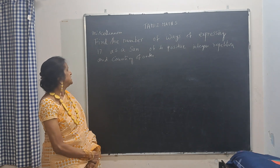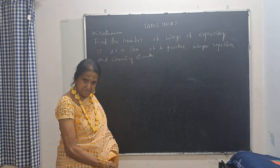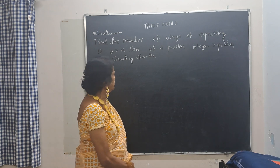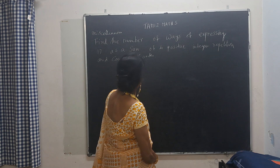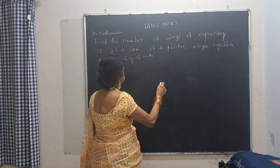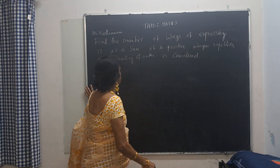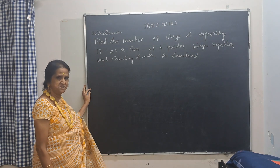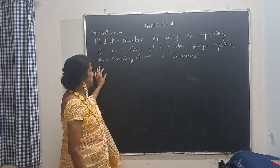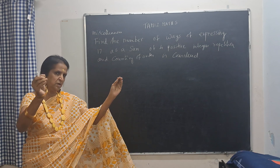Let's start. Find the number of ways of expressing 17 as a sum of 4 positive integers where repetition and counting of order is considered. Repetition and counting of order is considered. You can write 'considered' and 'allowed'.